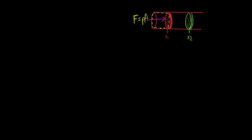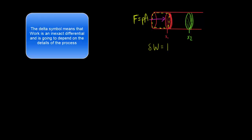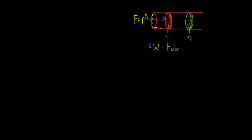The work done by our system equals force times the change in distance. Our force is pressure times area, so we have pressure times area times DX. Since A·DX equals DV, the change in volume, we rewrite this as the work done by the system equals P·dV. Integrating both sides with respect to volume from V1 to V2 gives us our general work equation.